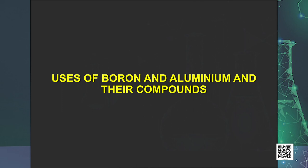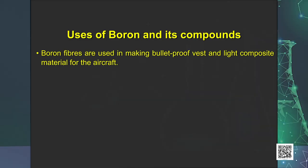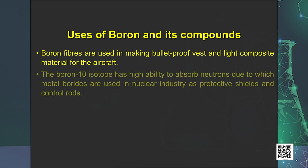Now let us discuss some of the uses of boron, aluminium and their compounds. Boron is a hard refractory solid of high melting point, low density and very low electrical conductivity, thereby finding a variety of applications. Boron fibers are used in making bulletproof vests and light composite materials for aircraft. The boron-10 isotope has a high ability to absorb neutrons, due to which metal borides are used in the nuclear industry as protective shields and control rods.